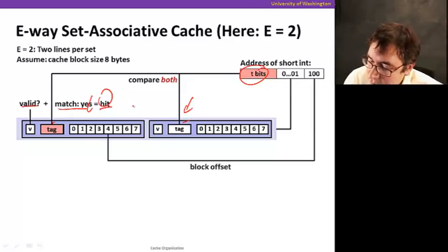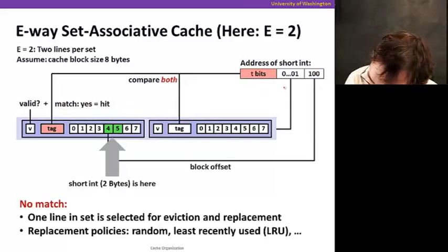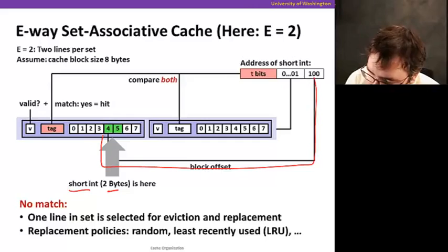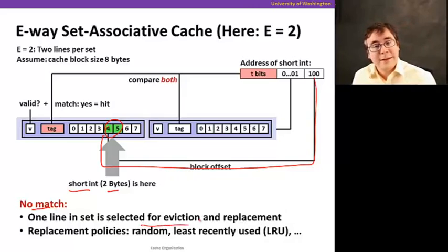So let's say that we determine that this is a hit. So now, the same thing, we're going to get the data. So now we happen to do a two-byte, we do short int, right? Reading only two bytes. That's where the offset starts. We're going to get these two bytes here. Read it and send it to the processor. So if there's no match, one line, one of those is selected for eviction and replaced. As I said before, we normally use this policy called least recently used.